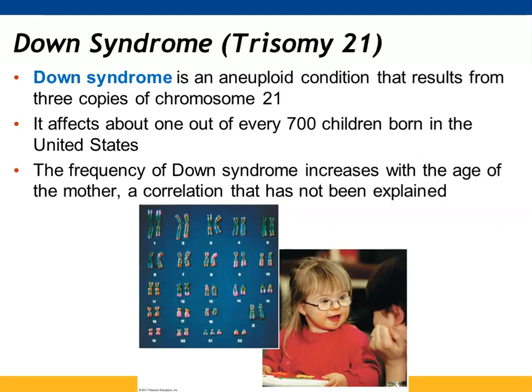With Down syndrome, you get a third copy of chromosome 21. There are typical physical features seen in individuals with Down syndrome, some intellectual deficits, and physical developmental benchmarks that are not met. One in every 700 children in the U.S. has Down syndrome. There has been a noted increase in frequency of Down syndrome with the age of the mother. One possibility relates to the age of the eggs, which have been present in a female since she was capable of reproduction, but more work remains to be done.